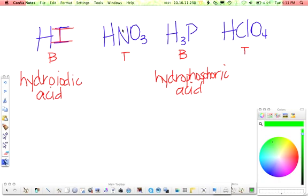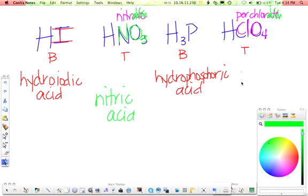Moving on to the ternary. This time we do not use the hydro prefix. Just look at your polyatomic ion. NO3, if you look on your list, and you should already have this memorized, you know that NO3 is nitrate. ClO4 is perchlorate. Whenever you're naming a ternary acid, the ate is replaced with the suffix ic. So replacing ate with ic, then you just write the word acid. This one is nitric acid. And this one over here is perchloric acid.